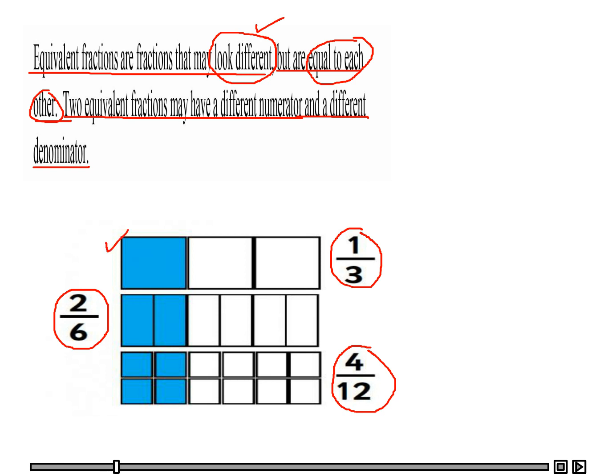Let's look at the first tape diagram. The first tape diagram has been divided into three equal parts and one shaded, which is one-third.